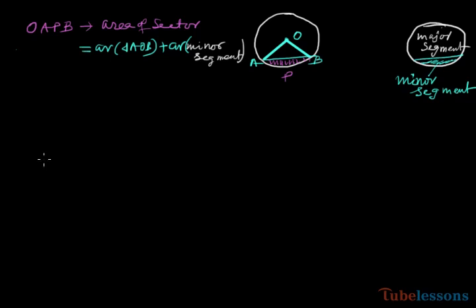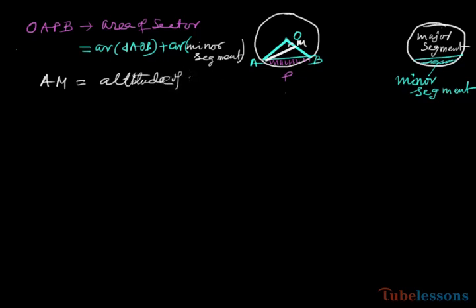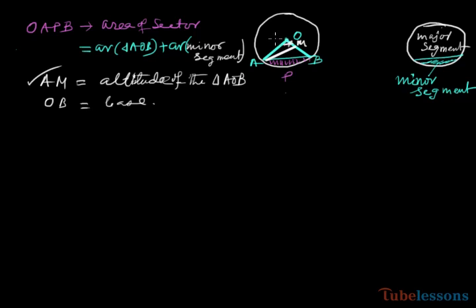First we will learn how to find the area of the triangle. We will draw an altitude from A to the line OB. The base is OB, and the area of triangle AOB is half base into altitude. We have the angle at the center as theta — angle AOB is theta.